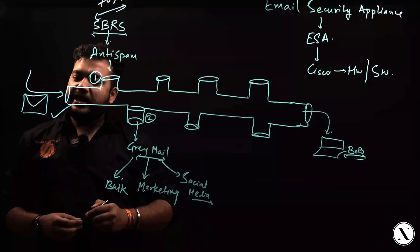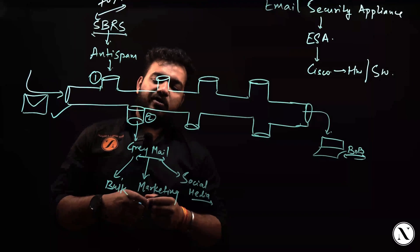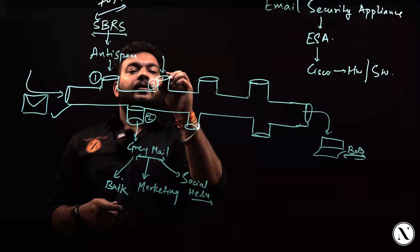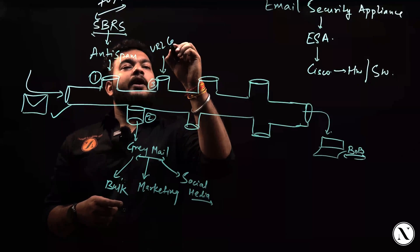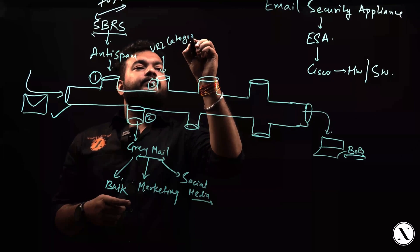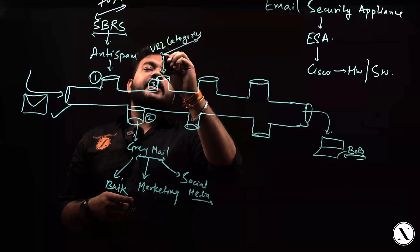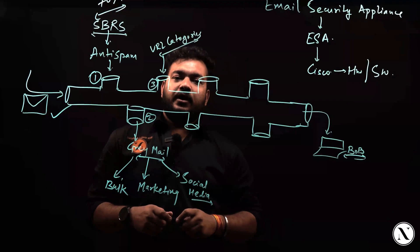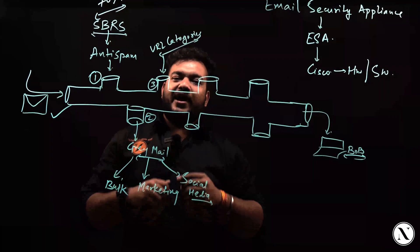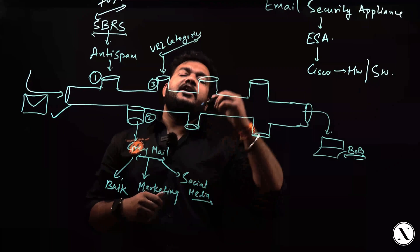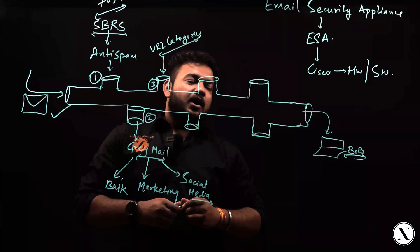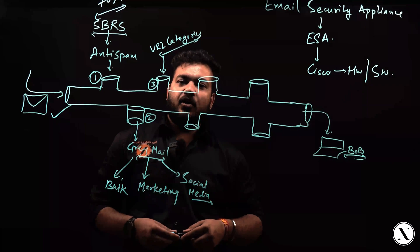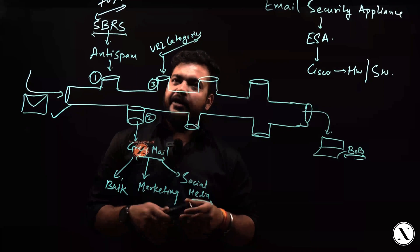If the outside email has crossed the second barrier check, third, it will be received by URL categories. In URL categories, we will be checking the pre-filter categories which are available. If any email falls under a category — for example, hacking websites, fashion websites, or government-related websites — it will be filtered accordingly.